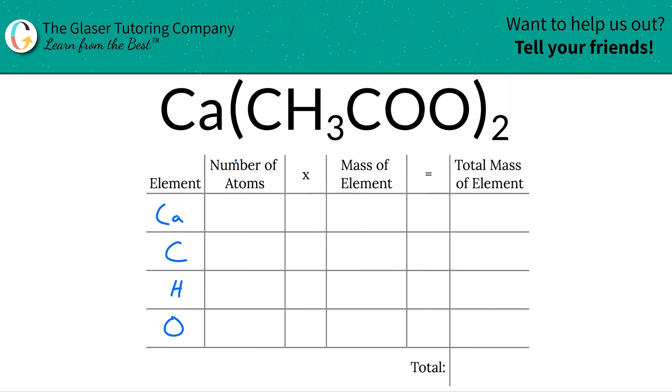Next is the number of atoms. For calcium, there's only a subscript of one, which means there's one calcium atom. Now carbon, you have to be careful here. Inside the acetate anion, there are two carbons, one carbon there and one carbon here. So that would be a total of two if you had only one acetate, but you have two of them. Therefore, you would have a total of four carbons. In each acetate you have two carbons, but you have two acetates, so it'd be a total of four, two times two.